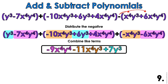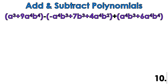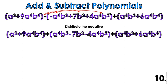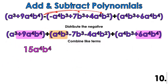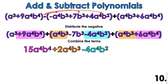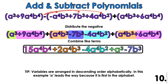Now we're going to do 10 out of 10. We have a negative to distribute — change all those signs. Then combine our like terms by looking for our biggest variable parts. We have 9a⁴b⁴ and 6a⁴b⁴: 9 plus 6 is 15. Next, 1a⁴b³ plus 1a⁴b³ gives 2a⁴b³. Then a⁴b² — only one, so it comes right down. Then we bring down a-cubed and b-cubed. And there you have it — you finished example 10!